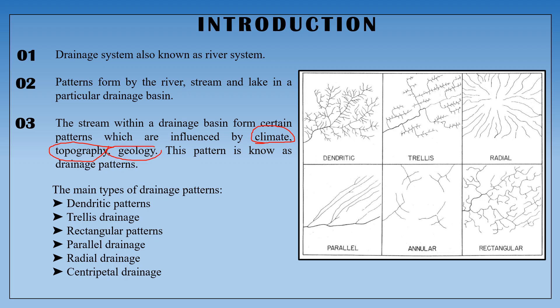There are several types of drainage patterns. The main ones are: Dendritic Drainage Pattern, Rectangular, Parallel, Radial, and Centripetal. Also Annular Drainage Pattern, Pinnate Drainage Pattern, and Herringbone Drainage Pattern.